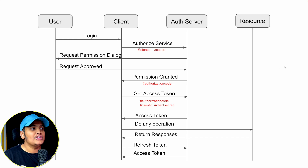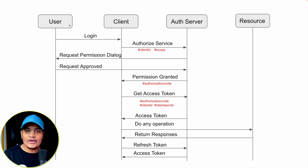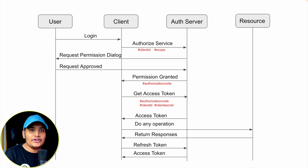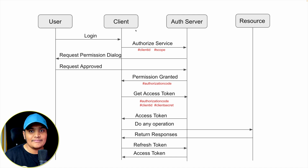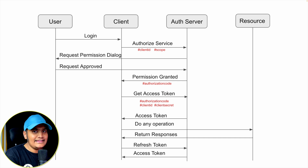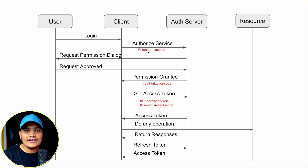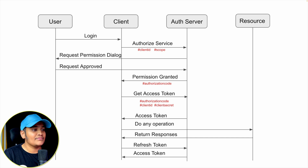There are different authentication servers available and you can build your own authentication server as well. The OAuth server is something that will work to authenticate your request. Whenever a user is trying to log in, consider the client as one of the applications — this client authenticates you on behalf of your OAuth server. Whenever you're trying to log in to that particular client, the client will send an authorization request to the OAuth server, saying it wants to authorize for a particular user. The client will send its client ID and the scope.